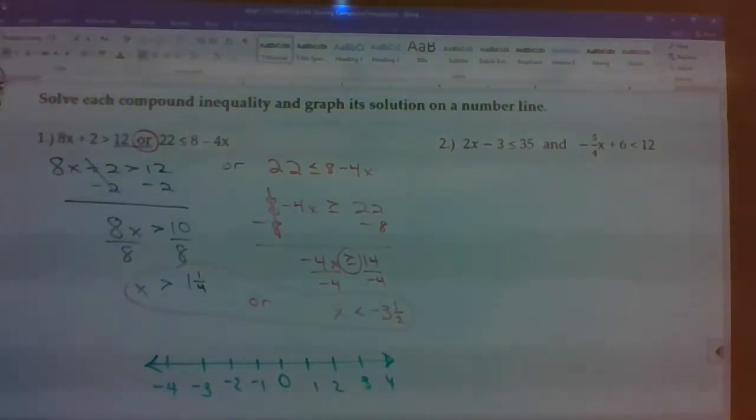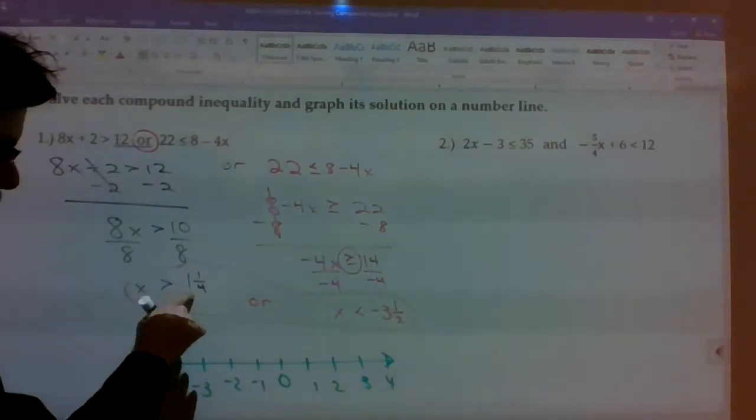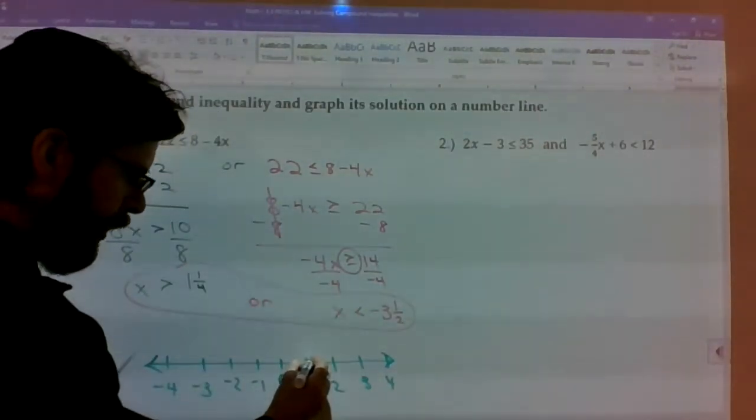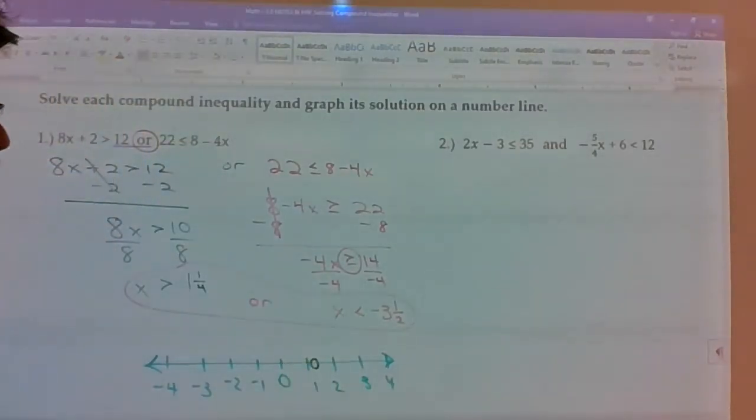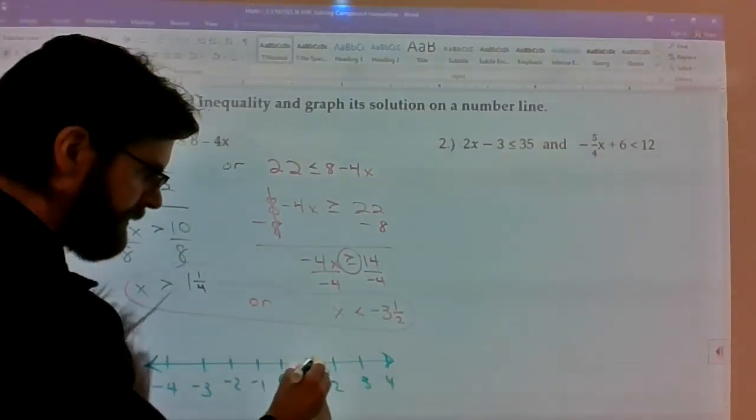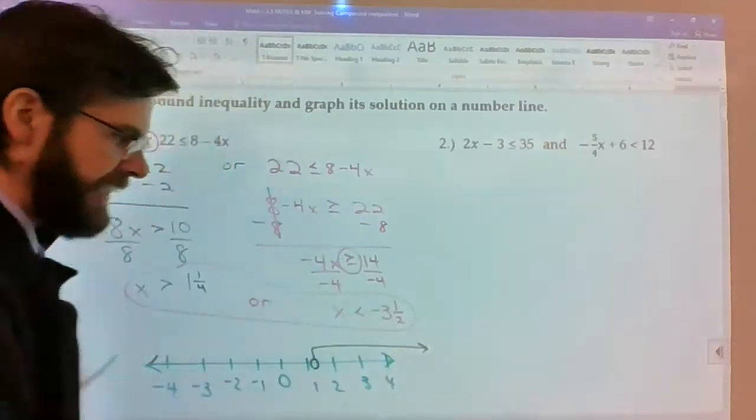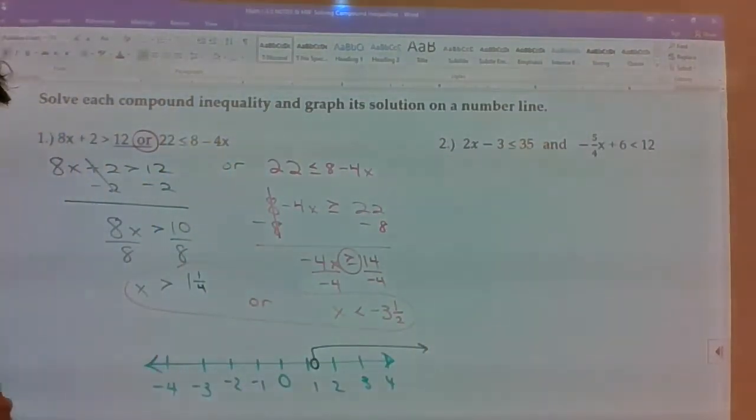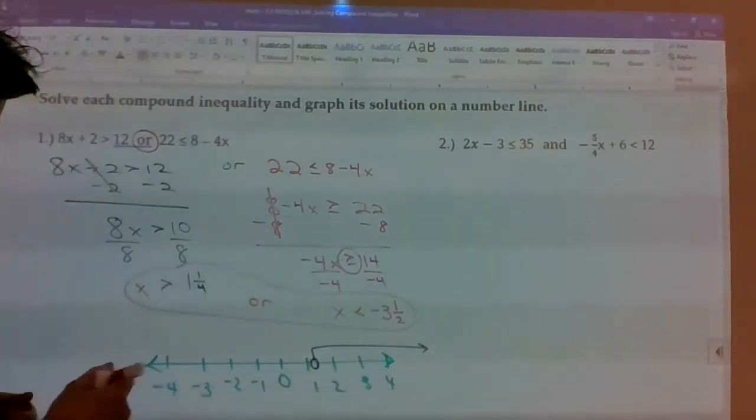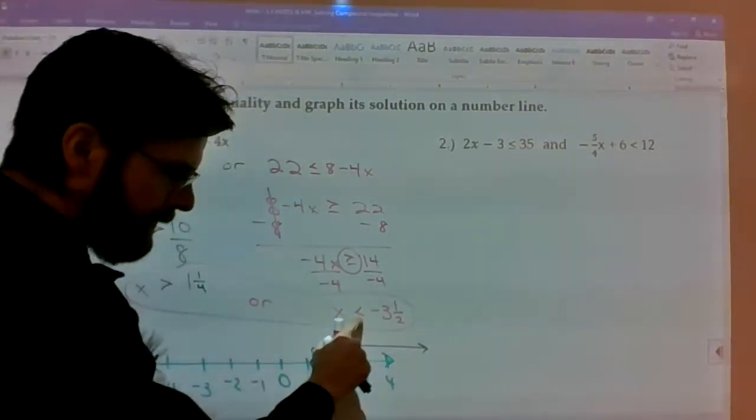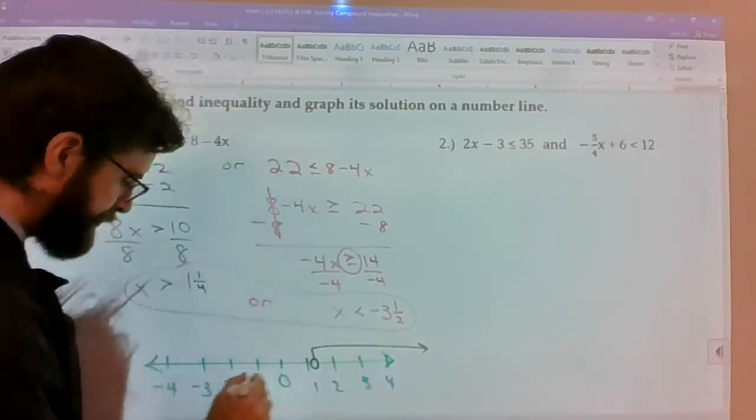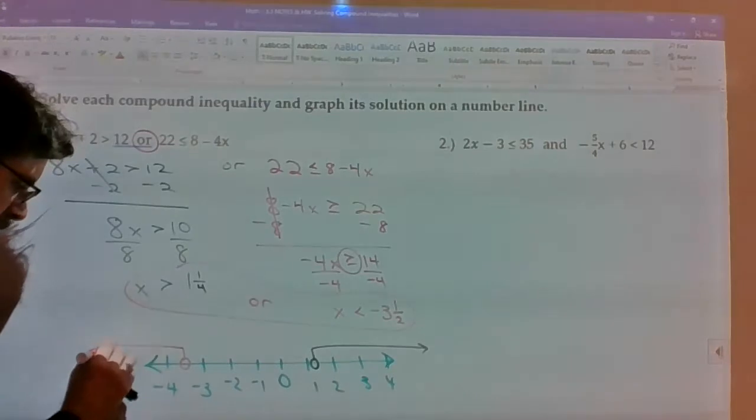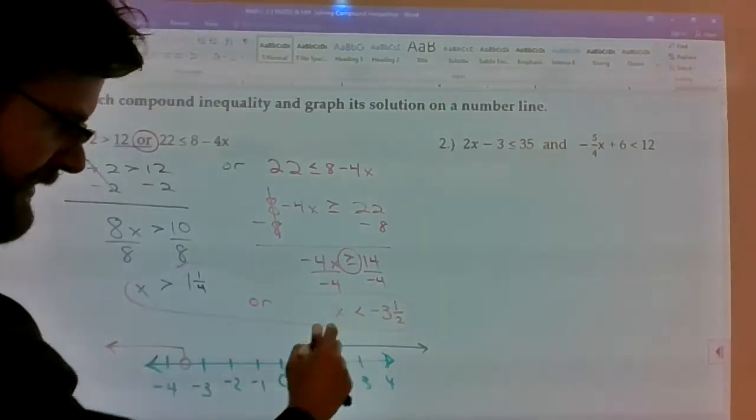So I've got x is greater than 1 and a quarter. So I'm going to go right here, put an open circle at 1 and a quarter, and send all my solutions to the right of it because it's greater than. For the other part, it's going to be an open circle at negative 3 and a half, so right in between negative 4 and negative 3, sending all those solutions to the left because it's less than.